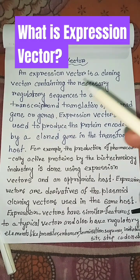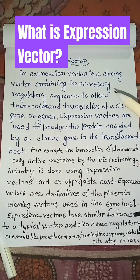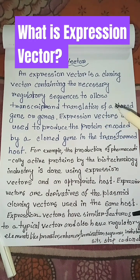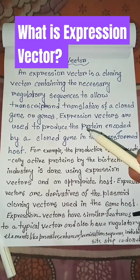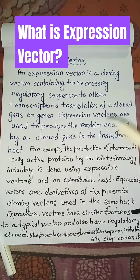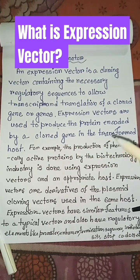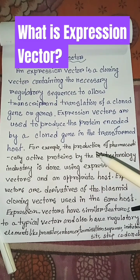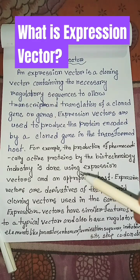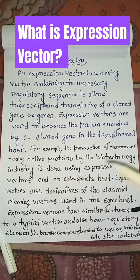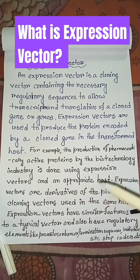What is an expression vector? An expression vector is a cloning vector containing the necessary regulatory sequences to allow transcription and translation of a cloned gene or genes. Expression vectors are used to produce the protein encoded by a cloned gene in the transformed host. For example, the production of pharmaceutically active proteins by the biotechnology industry is done using expression vectors and an appropriate host.